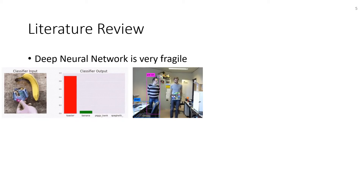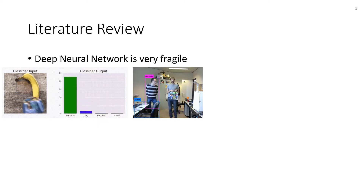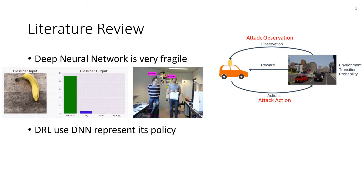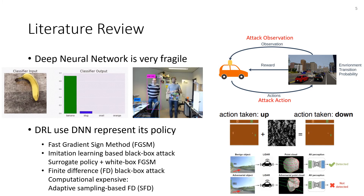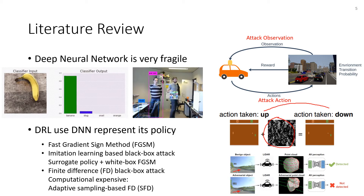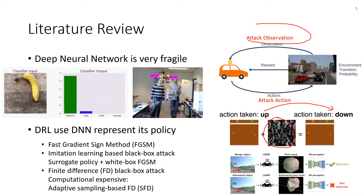Deep neural networks are very fragile — they can be easily fooled by some well-designed input. Since deep reinforcement learning uses a deep neural network to represent its policy, it's obvious that it can be fooled by some well-designed input, and the result can be pretty harmful. This is done by attacking the observation.